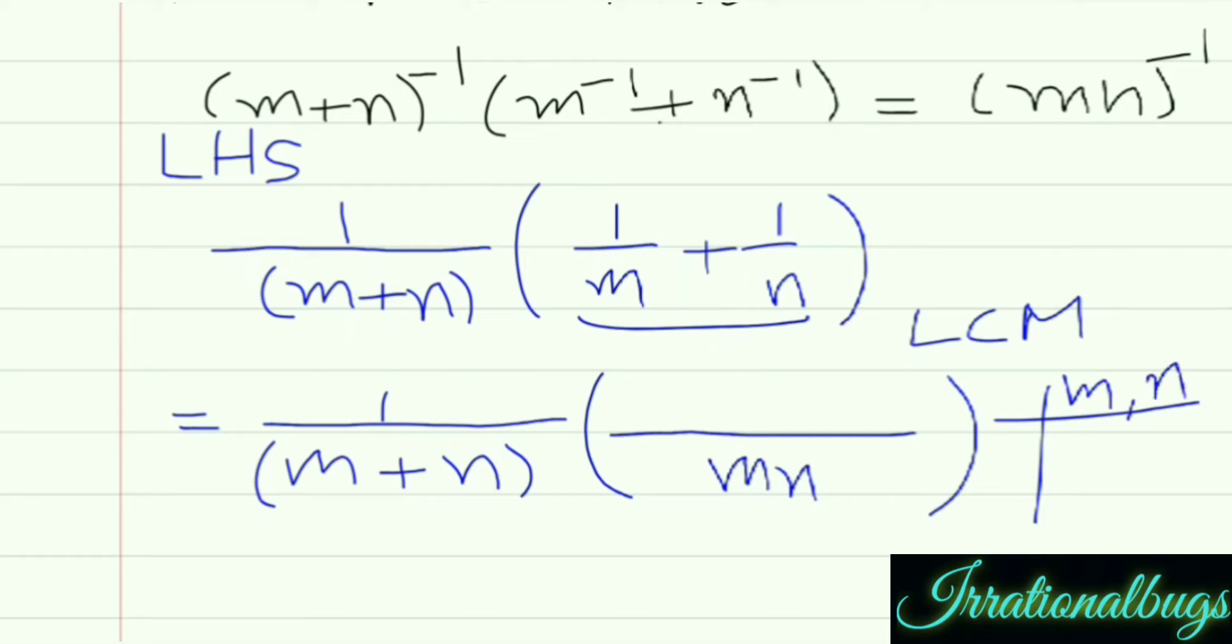m one times m, n as it is. Now n, because n already turned into m, so n one time n.